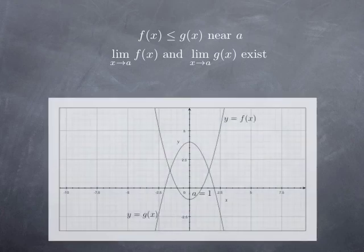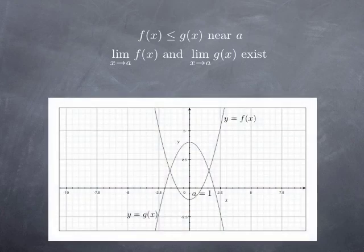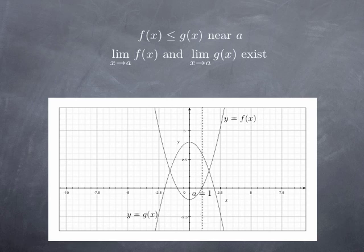So such a situation is represented on this graph. Let's say a is equal to 1. This is the line x equal 1. And you see that indeed on some interval around a we have the function g is larger than the function f. So the graph is above.